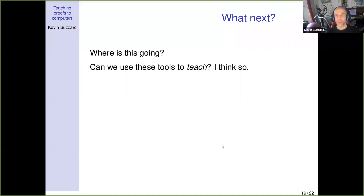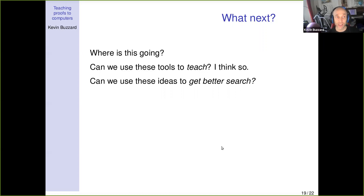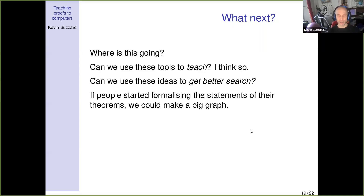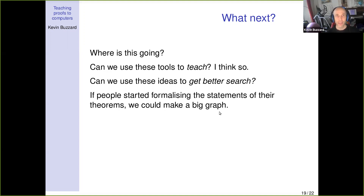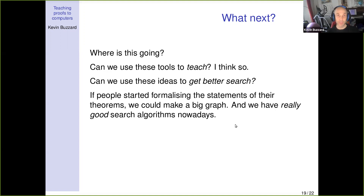Can we use these tools for better search? If you want to know whether a complicated math theorem has been proved already, typing it into Google probably won't work — it'll find you some MathOverflow page with the closest approximation. But what if this database grew larger? If we could persuade people to formalize just the statements of their theorems — not even the proofs, just the statements — and build a big graph, the AI people are extremely good at search and could find trivial consequences of pairs of theorems already in the literature.